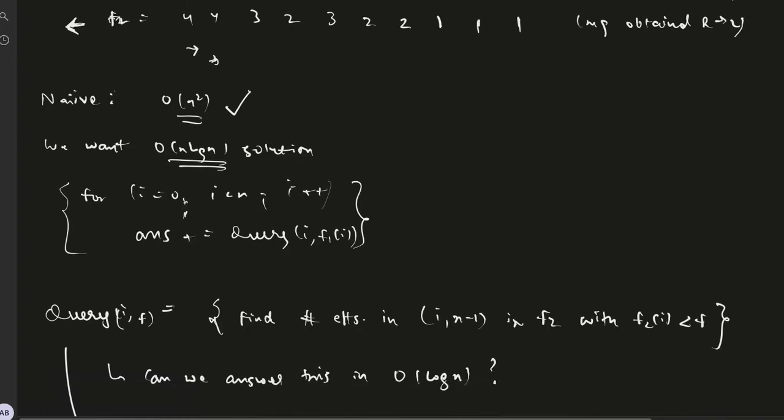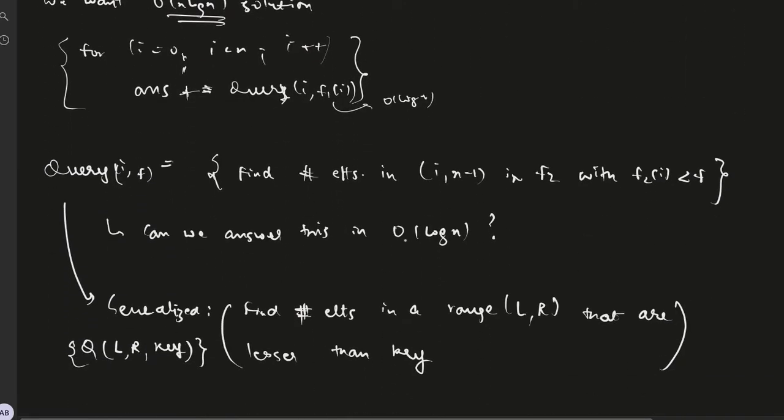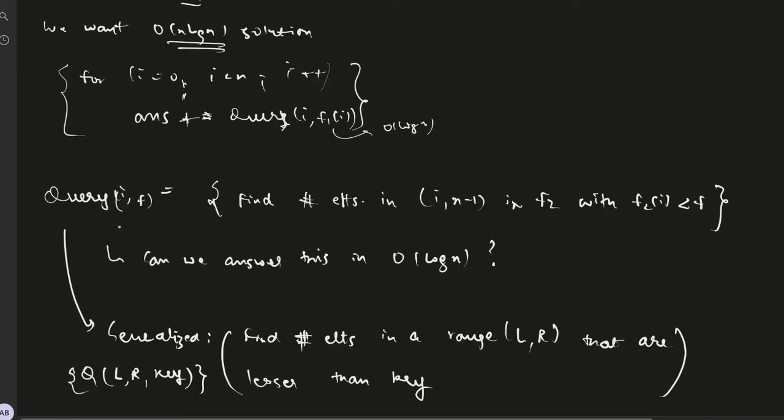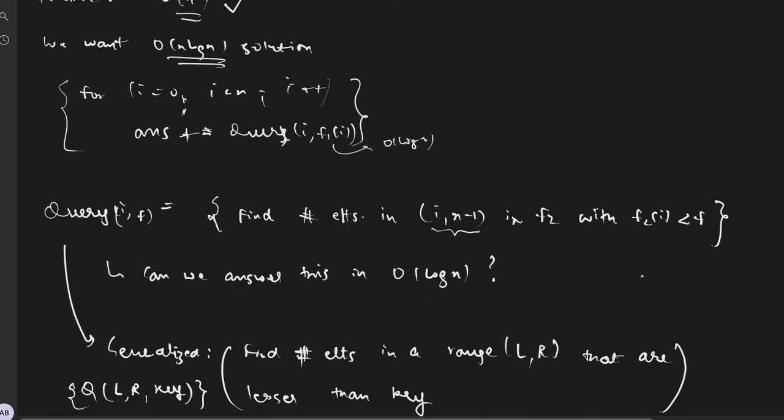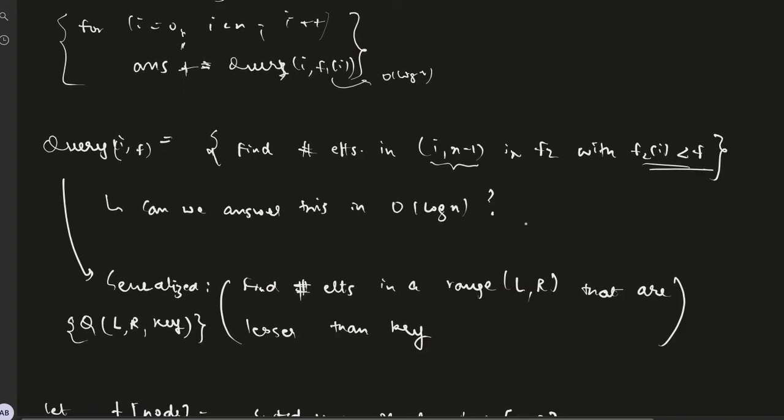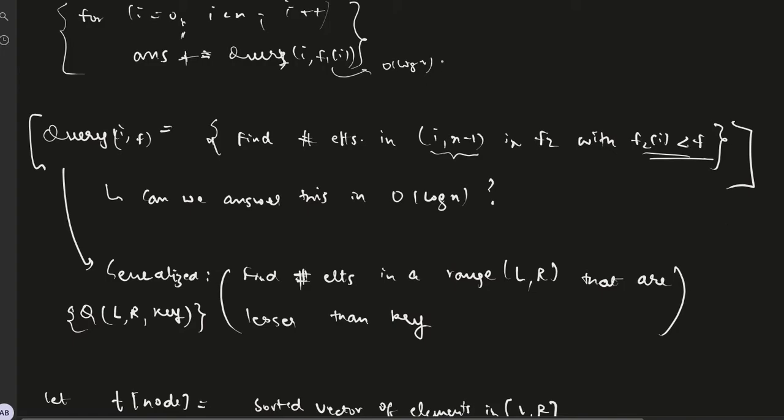For that we iterate on the index i, and we define a query which should work in order of log n. We define query of i comma f as the number of elements in the index range i to n minus 1 in the array f2 which satisfy this condition. Now the way we answer this query is by maintaining a merge sort tree on the array f2.